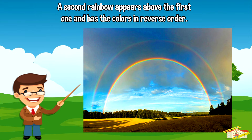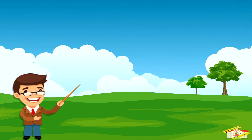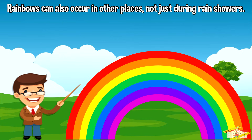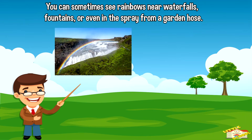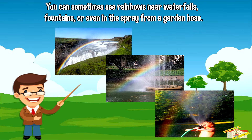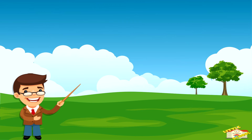Now here are some fun facts about rainbows. Sometimes you can see a double rainbow — a second rainbow appears above the first one and has the colors in reverse order. Rainbows can also occur in other places, not just during rain showers. You can sometimes see rainbows near waterfalls, fountains, or even in the spray from a garden hose.